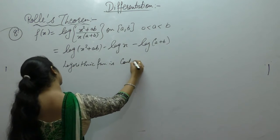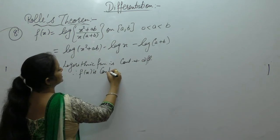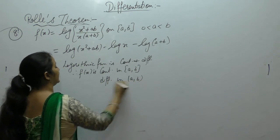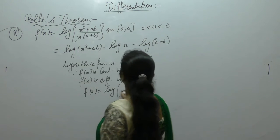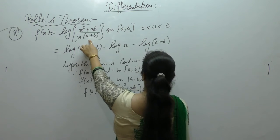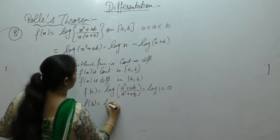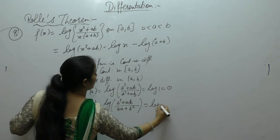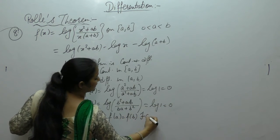This is a logarithmic function, which is continuous and differentiable. Therefore f(x) is continuous on closed interval [a,b] and differentiable on open interval (a,b). Now f(a) = log((a²+ab)/(a(a+b))) = log(a(a+b)/(a(a+b))) = log(1) = 0. Similarly, f(b) = log((b²+ab)/(b(a+b))) = log(1) = 0. So f(a) = f(b).